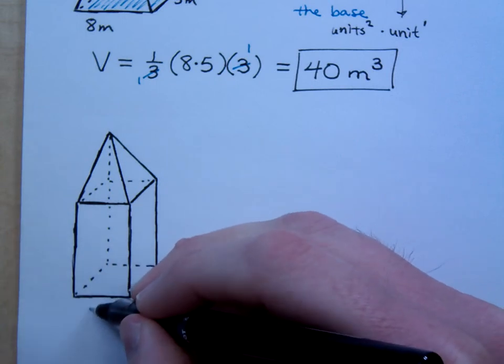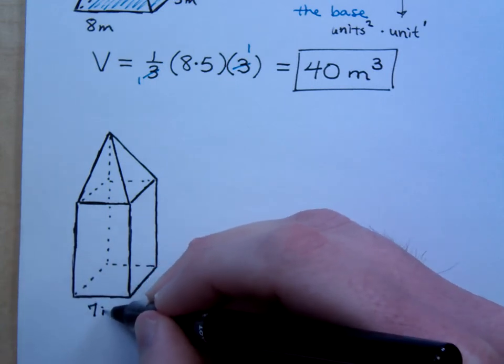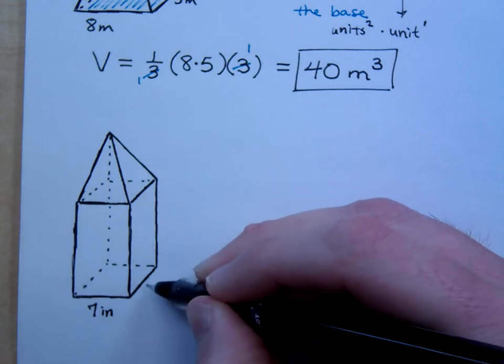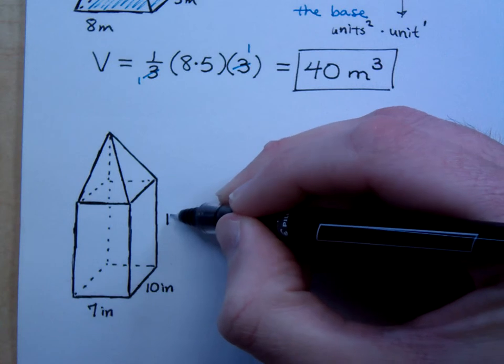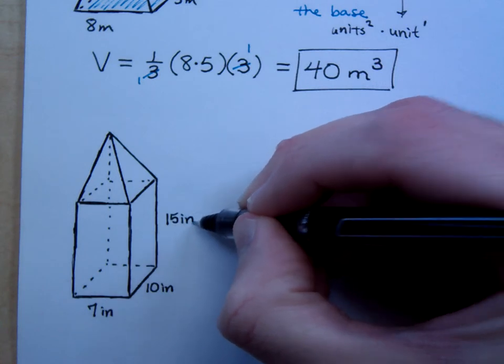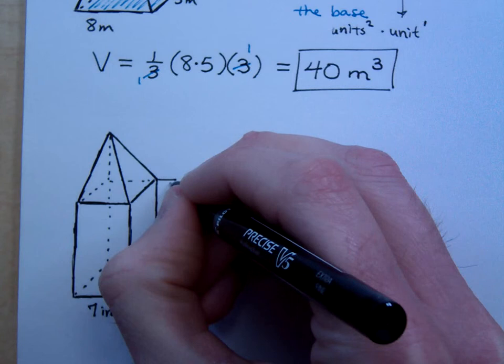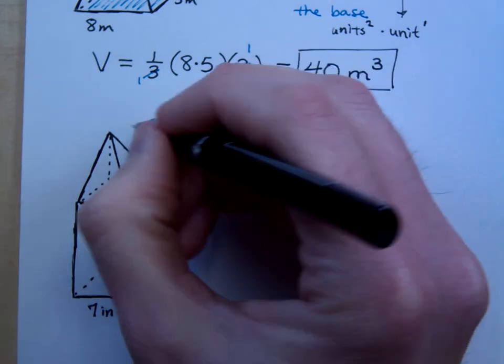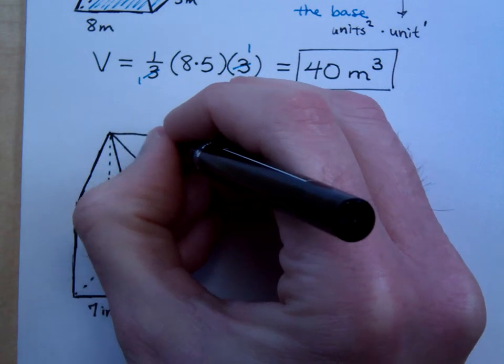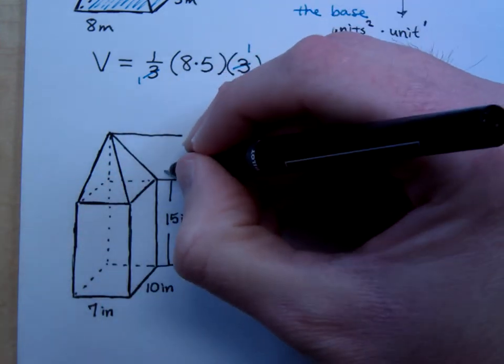If I say this guy is 7 inches, and this is 10 inches, with a height of 15 inches from here to here.